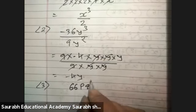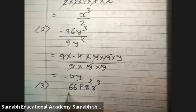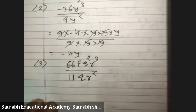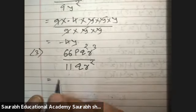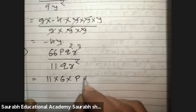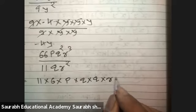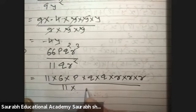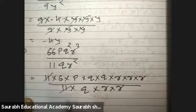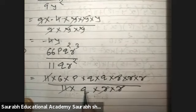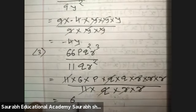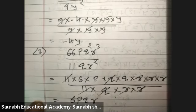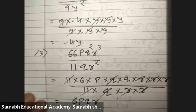Third: 66pq squared r, divided by 11qr squared. Now 11 times 6, p into q into q, r into q, r into r. 11 and 11 cut, r and r cut, q and q cut. So the final answer is 6pqr upon 1, that is 6pqr.